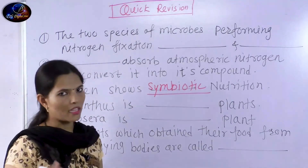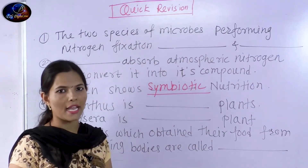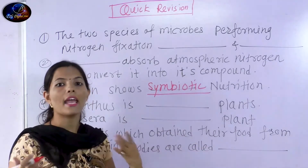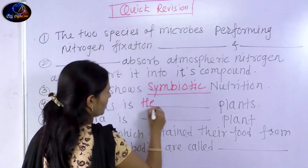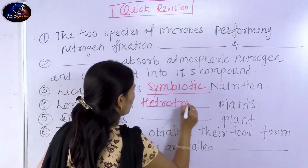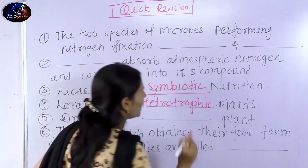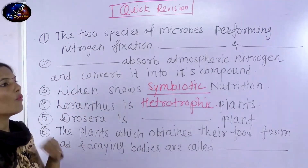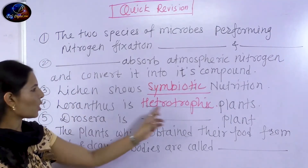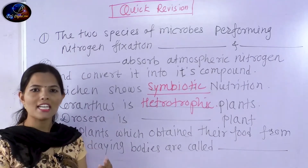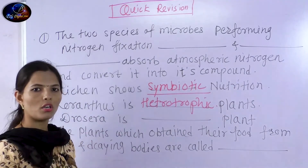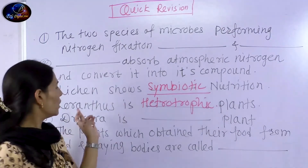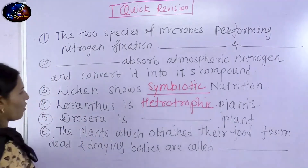Loranthus is a dash-dash plant. What is Loranthus? It is a heterotrophic plant. What does heterotrophic plant mean? It means the plant depends on other plants for its food. Plants which depend on other plants for their food are called heterotrophic plants.